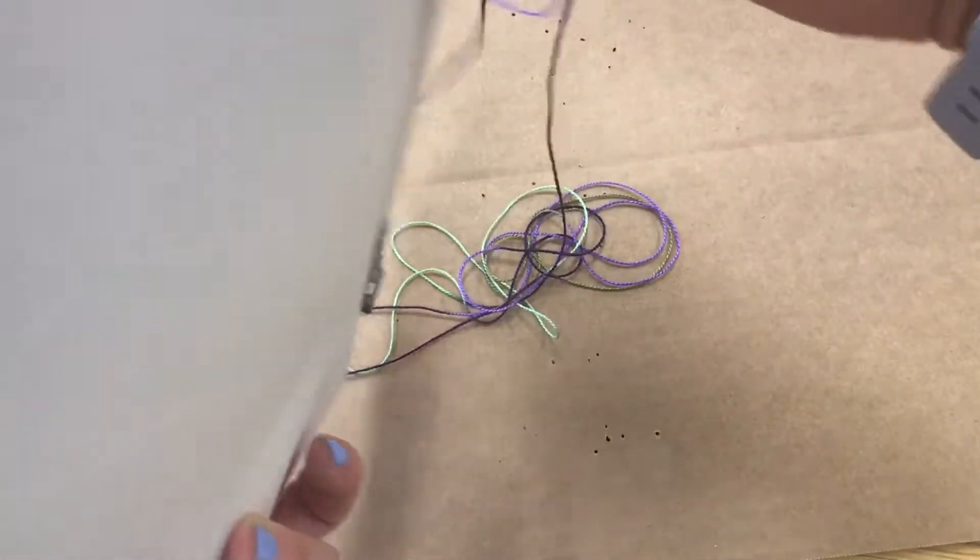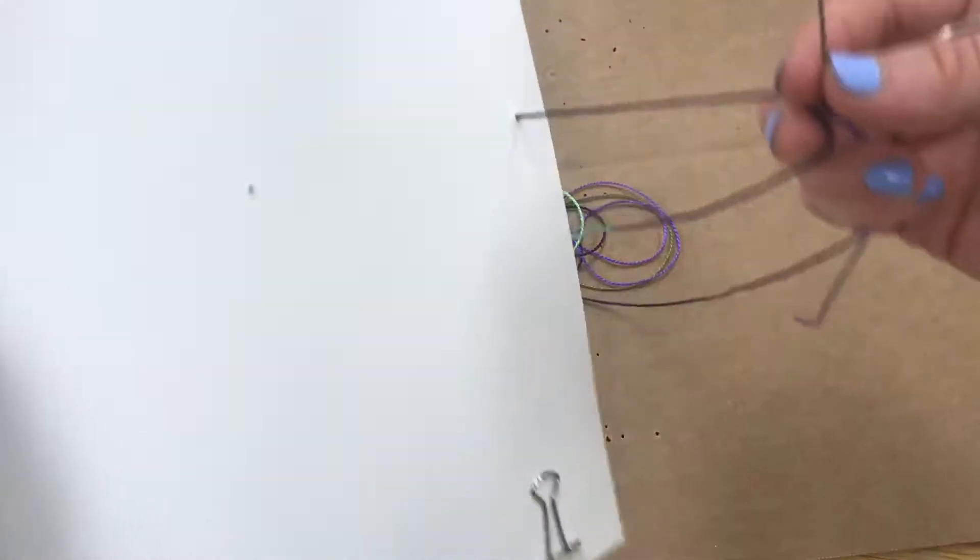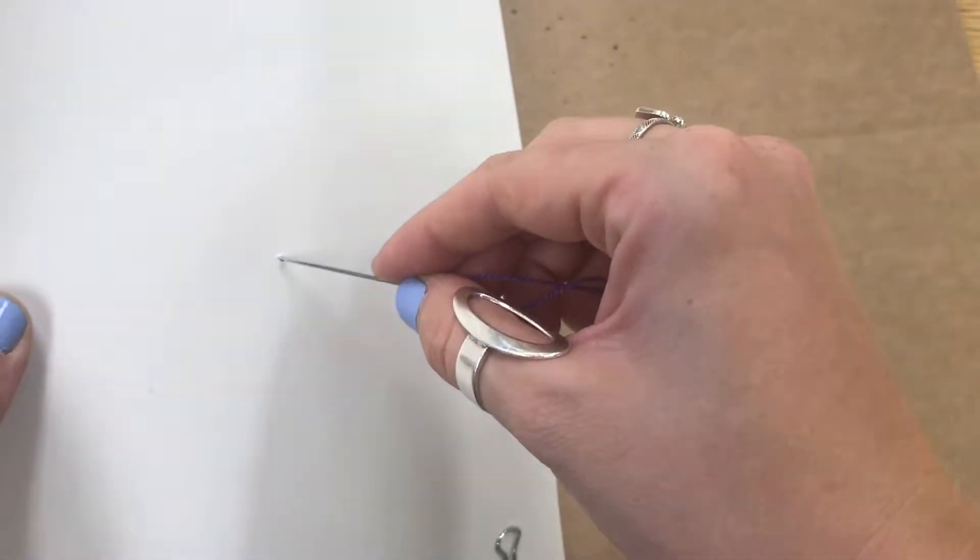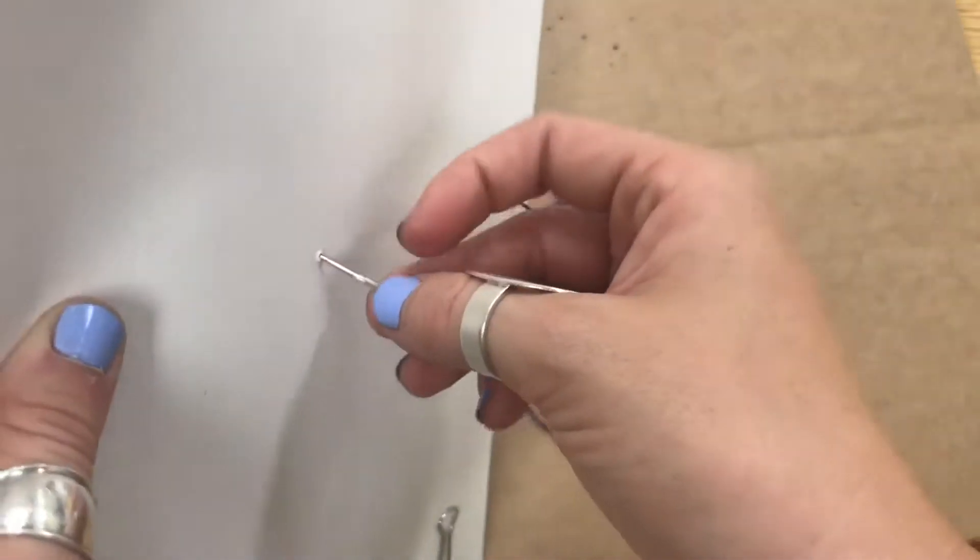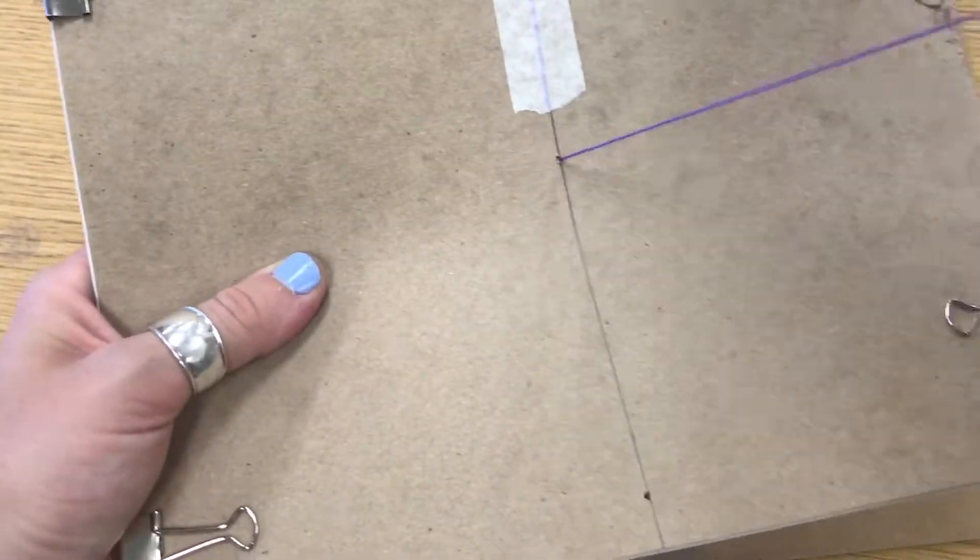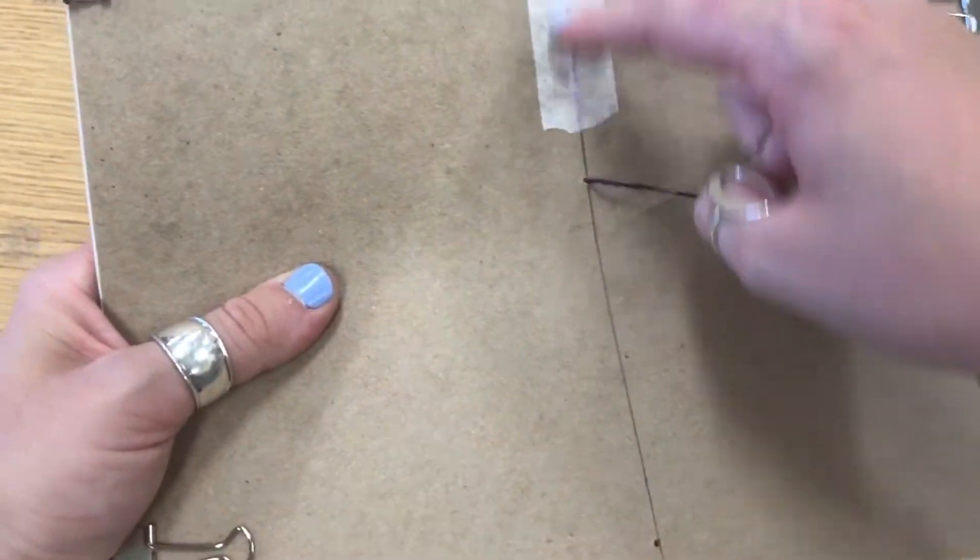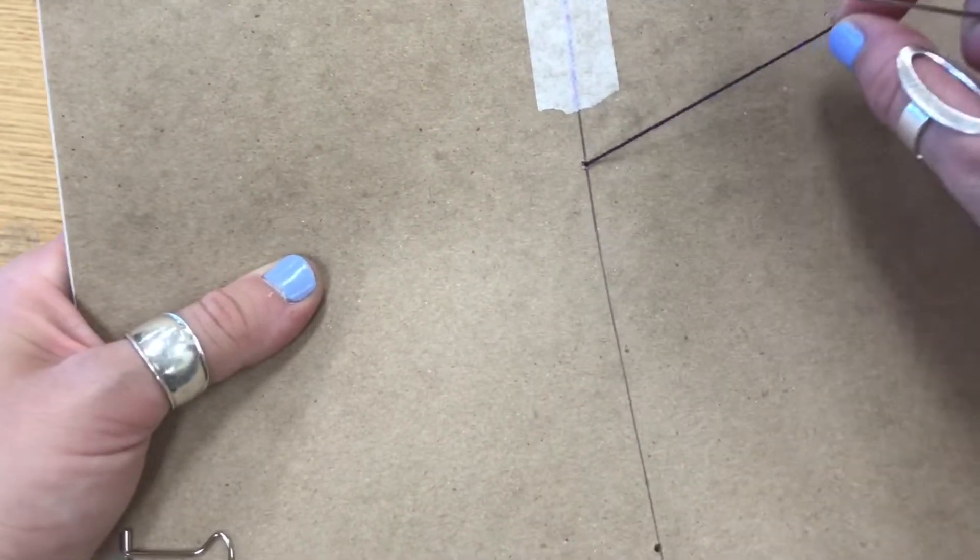Once your needle has been pulled all the way through, you're going to go from the inside back to the outside. You'll be able to see your hole. So you're going to put your needle in that way and pull it out that way. Pull it all the way through. Pull it, pull it, pull it, and it will stop because it's being held on by the tape.